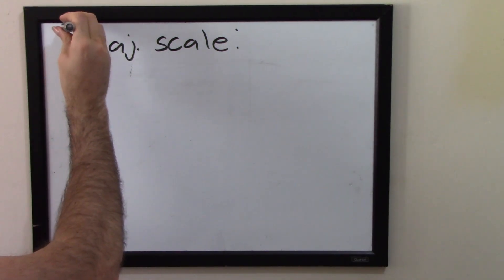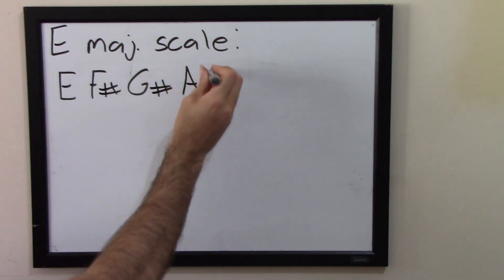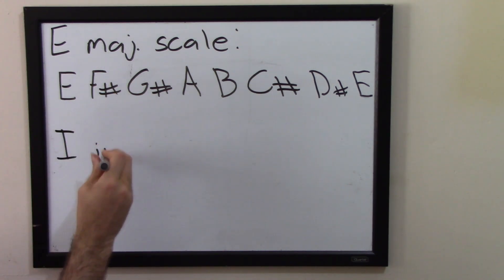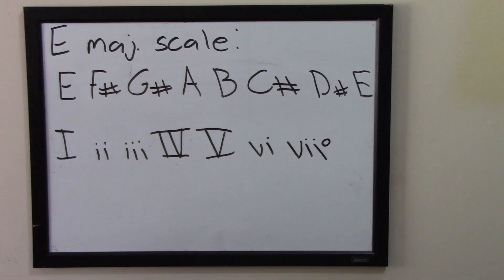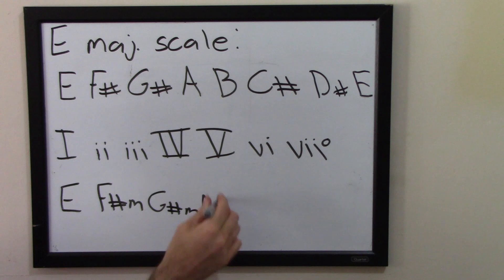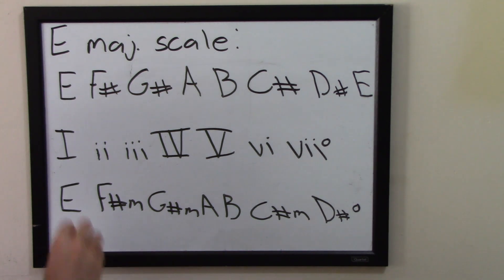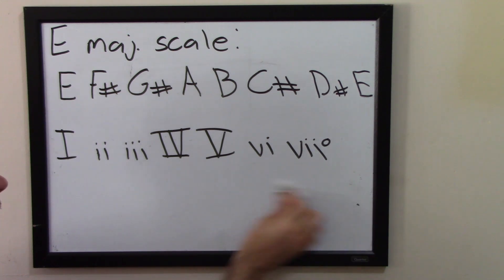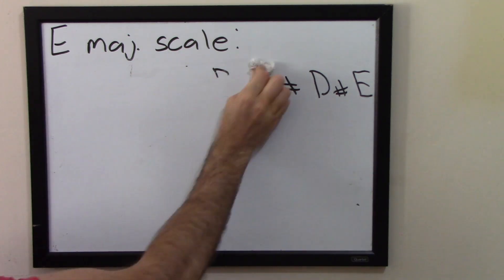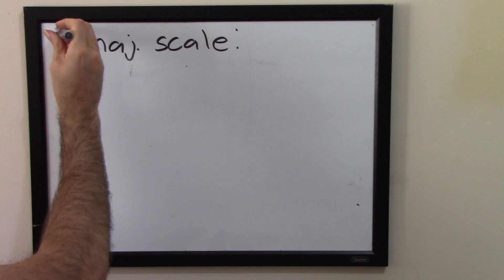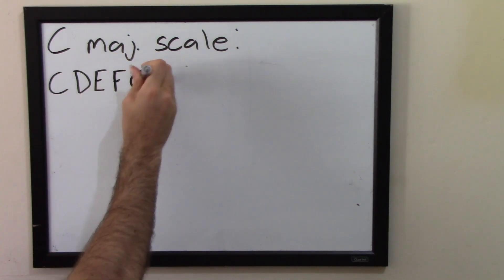If you change the scale, you will get totally different chords. For example, the E major scale is E, F sharp, G sharp, A, B, C sharp, D sharp, and E. If you take all the triads starting on the 1st through 7th degrees of the E major scale, you would get E major, F sharp minor, G sharp minor, A major, B major, C sharp minor, and D sharp diminished. So every major scale has these 7 triads that you can take out of it. But the fun does not end there, because you can keep going and take out not just triads, but 7th chords.